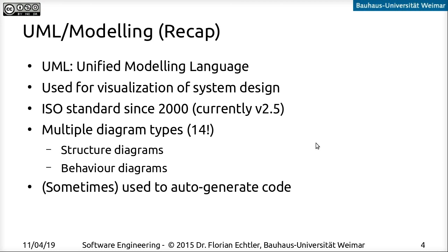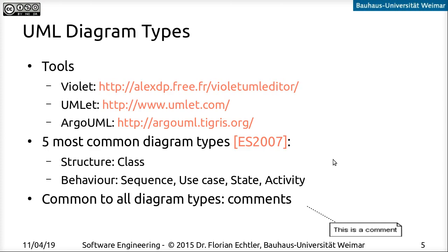Depending on what type of tool you use, you can also use UML to auto-generate Java code. So you draw a class diagram and then the UML tool will actually generate the code for you. Here are a couple of links for tools you might want to use: Wirelet, Umlet, ArgoUML. These are editors for UML. There are also online tools — just look for anything that's comfortable for you.